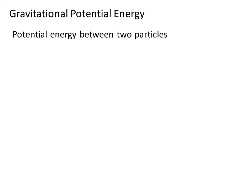The potential energy between two particles is given by this formula, where U is the potential energy, and it's a function of the separation between the two particles, shown as the magnitude of the vector r.